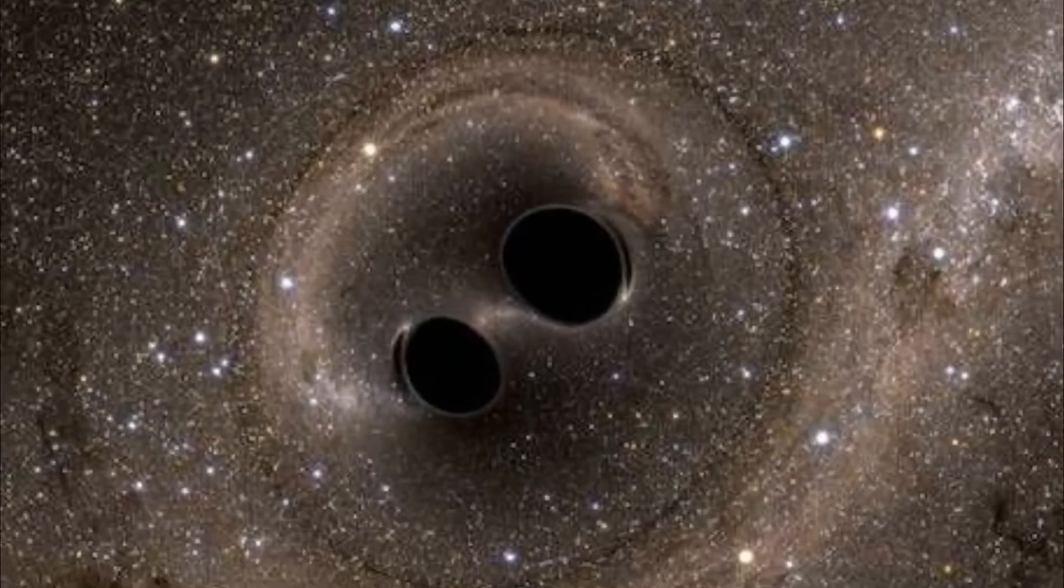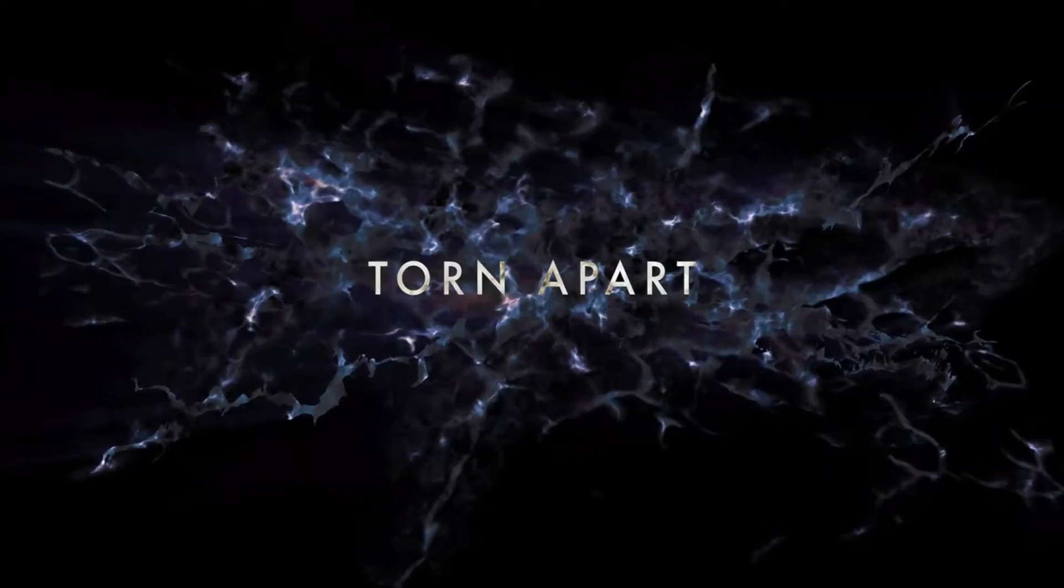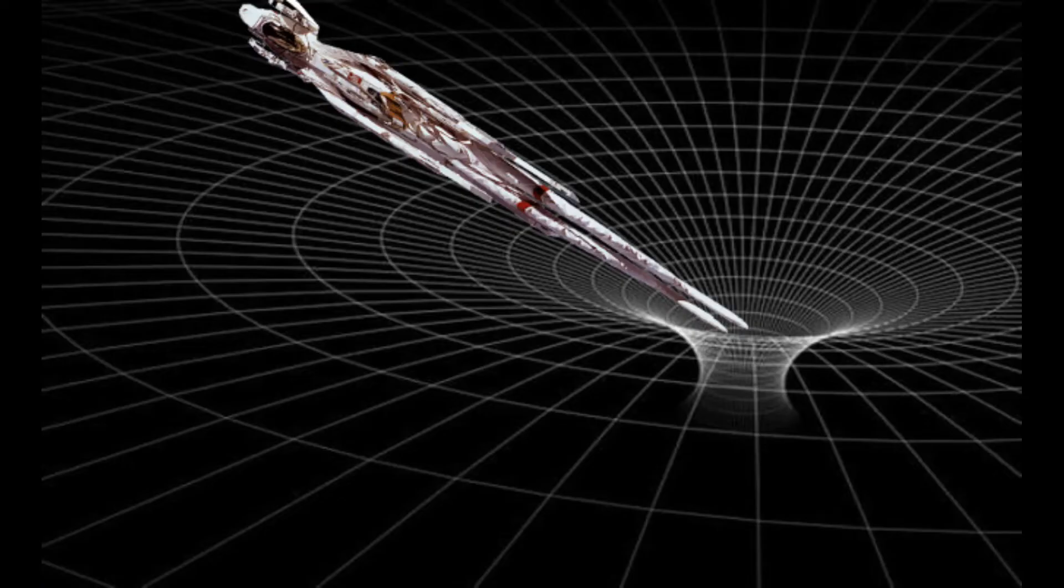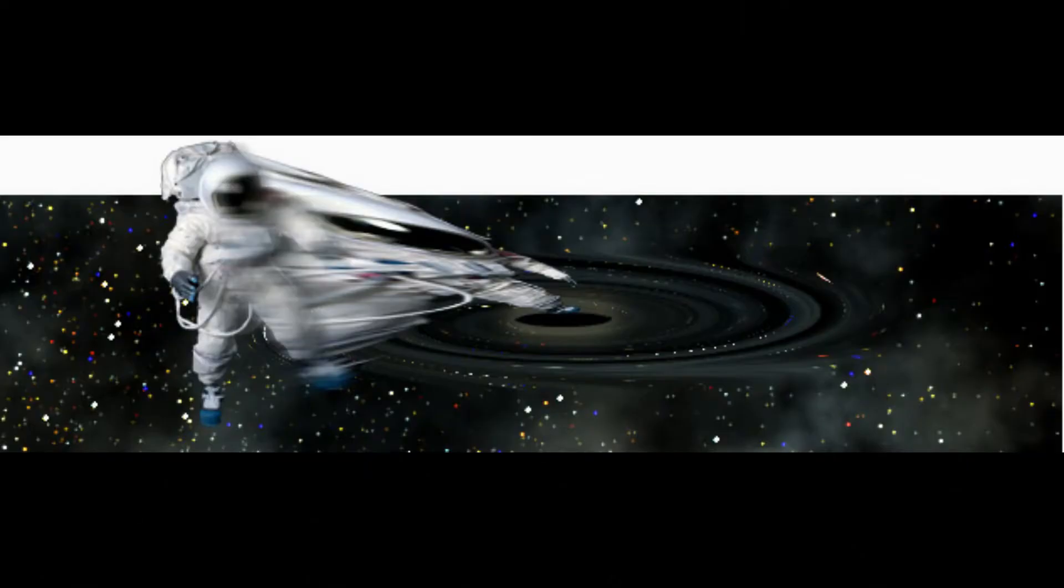When we choose to enter a black hole of small size, we get torn apart and turn into a shape of spaghetti due to the force of gravity exerted by the black hole, which pulls the leg first as it is nearer to it, and then the whole body.